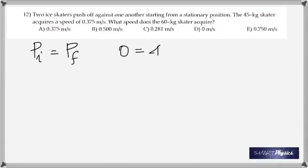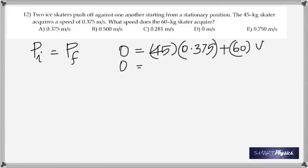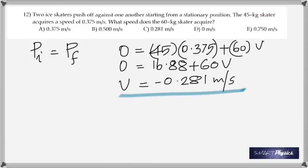Here, two ice skaters are pushing off against one another from a stationary position, so the initial momentum is zero. Apply the conservation of momentum and you get minus 0.281 meters per second.